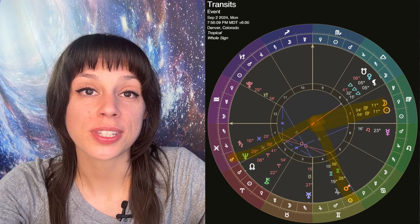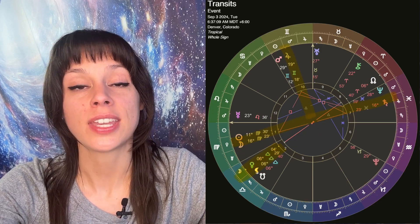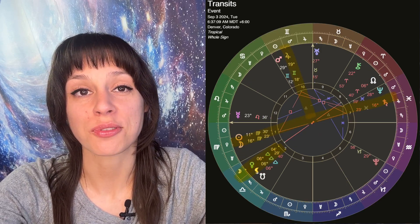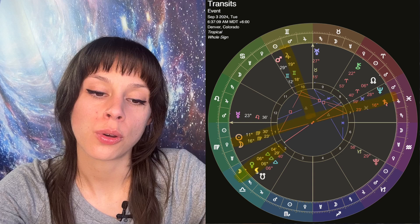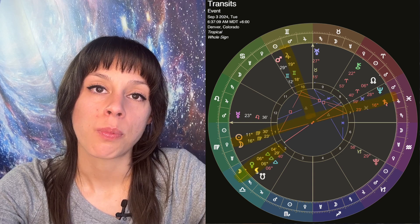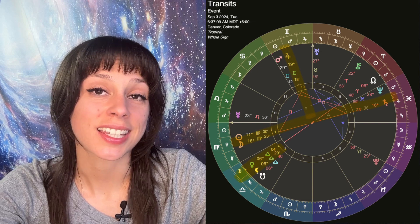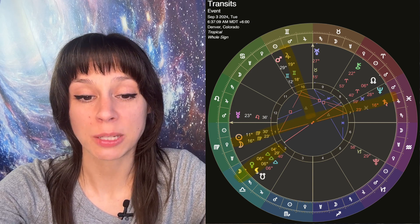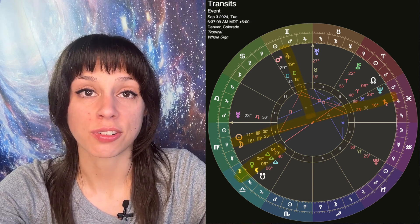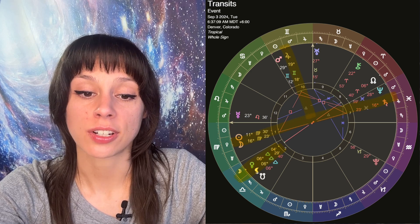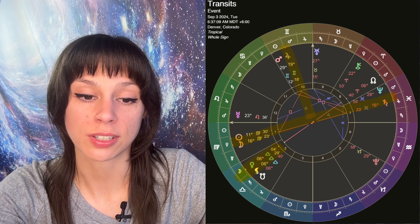Moving into Tuesday, September 3rd, Venus will make a conjunction to the south node. The south node is a point of minimization, disappearance. This is happening at six degrees of Libra. If you have any placements at six degrees of Aries, Cancer, Libra, or Capricorn, this could affect you.